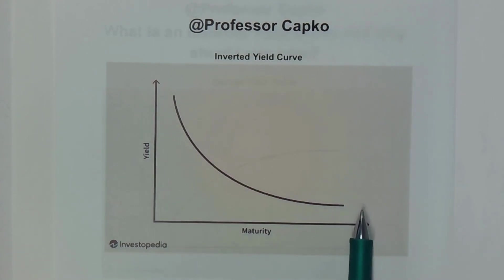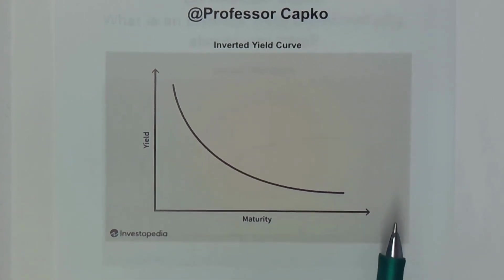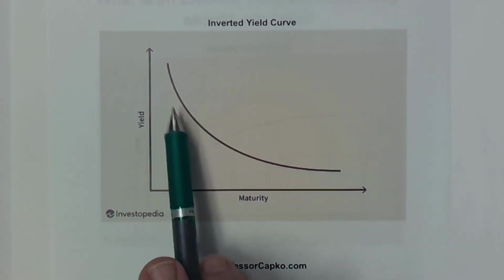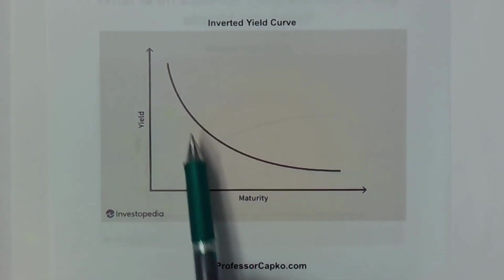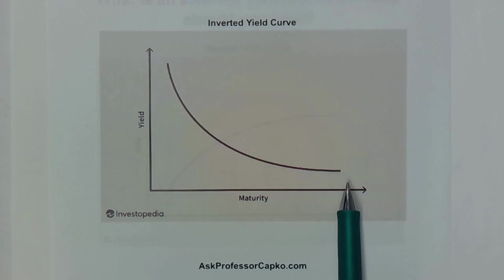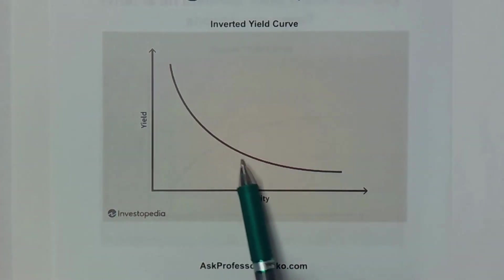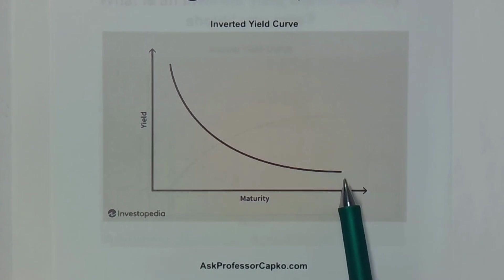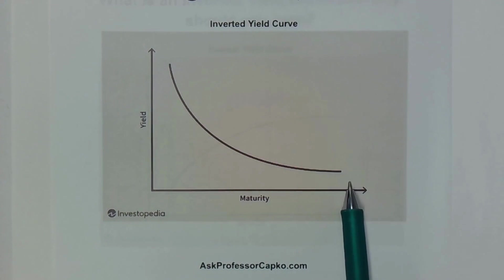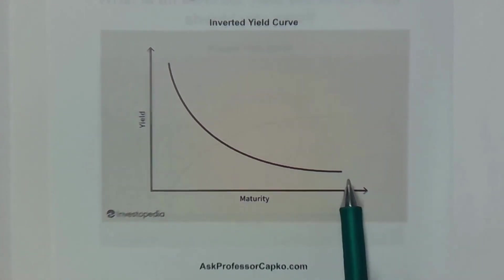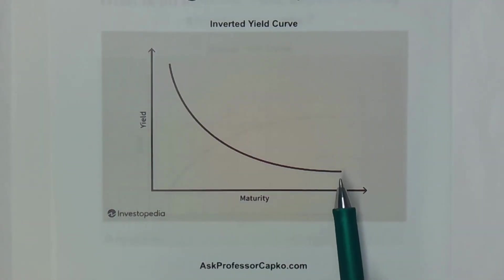Why is that important? One reason it matters is because an inverted yield curve sometimes indicates that we might be entering a recession. If we have an inverted yield curve, that might indicate we are headed into a recession, so you want to take a look at the yield curve and see what it looks like.